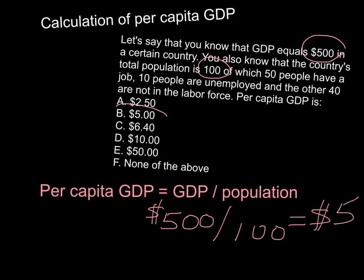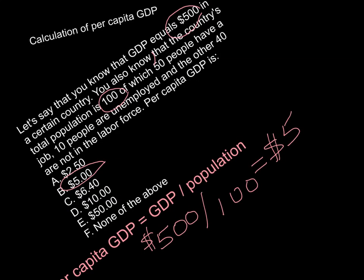So the answer is B, $5. You probably discovered that there was some information in this question that you didn't need. For example, you didn't need to know that 50 people have a job, 10 people are unemployed, or that 40 people are not in the labor force — that's all irrelevant information. The only things you needed were total GDP and total population.